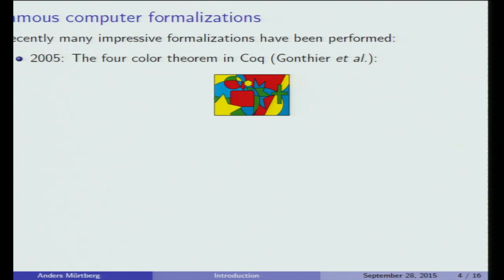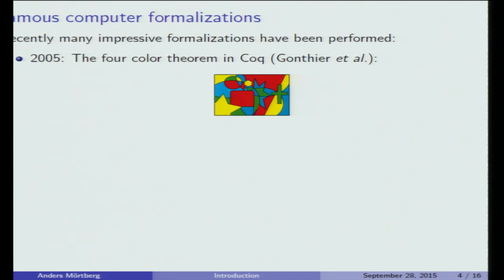I want to show some examples where formalization of mathematics on a computer has been a major impressive project. The first one is the four-color theorem, which talks about colorings of maps. The theorem says that for any configuration of a map, you can color it with only four colors so that no two adjacent regions have the same color. The original proof was proved by Haken and Appel in the 70s by reducing it to a large finite number of cases checked by computer.